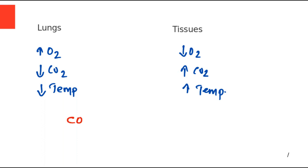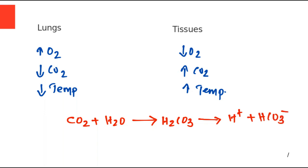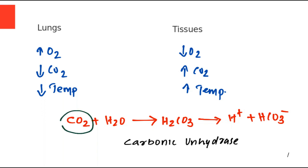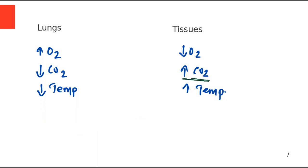You have to know one speciality of carbon dioxide. Whenever carbon dioxide enters our body, it combines with water to form carbonic acid — commonly known as soda water. This carbonic acid dissociates into H⁺ and HCO₃⁻. This reaction in our body is catalysed by an enzyme known as carbonic anhydrase. Importantly, wherever carbon dioxide content is high, H⁺ will also be produced. So high CO₂ means high H⁺. In the tissues there is high carbon dioxide, implying a high concentration of H⁺ ions.